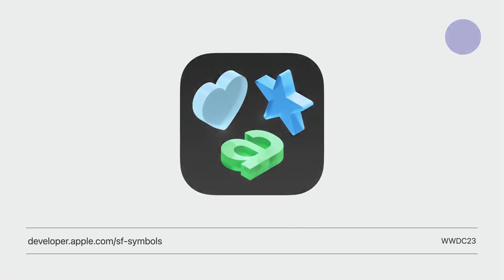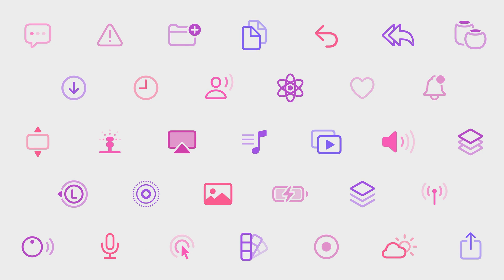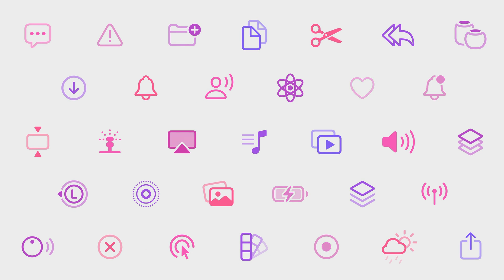If you want to learn about the new additions and the animation presets, you can find a new beta version of the SF Symbols app at developer.apple.com/sfsymbols. With SF Symbols 5, symbols reach new dimensions of expressiveness. Thank you for joining today — I hope you enjoy learning about what's new in SF Symbols.